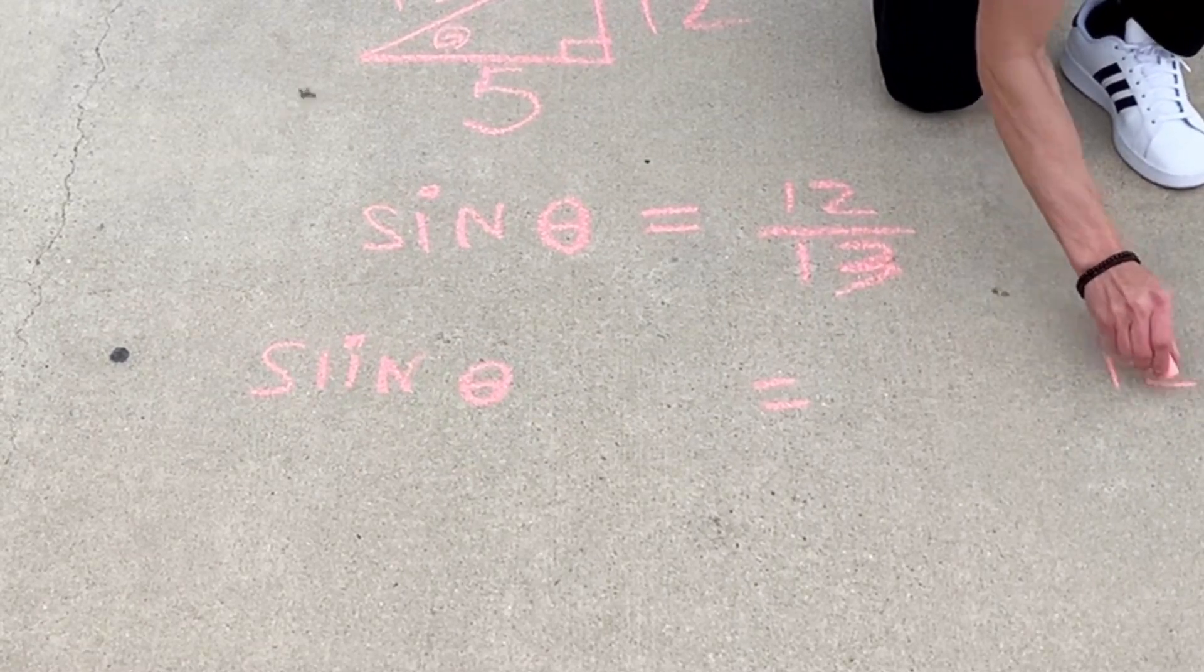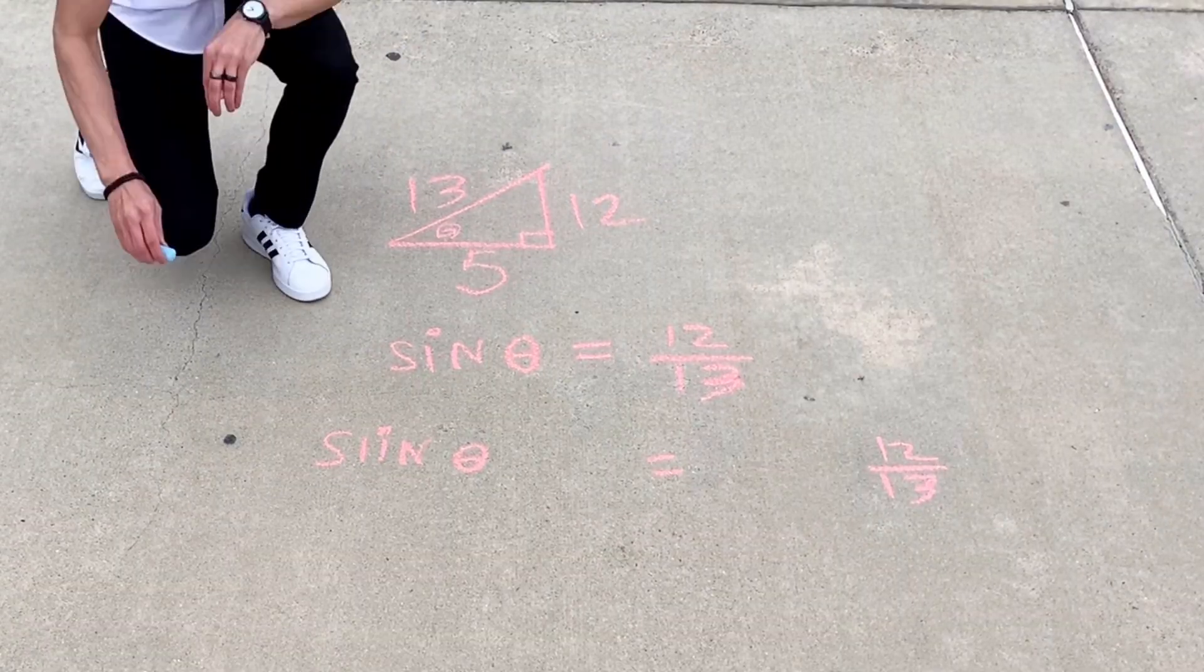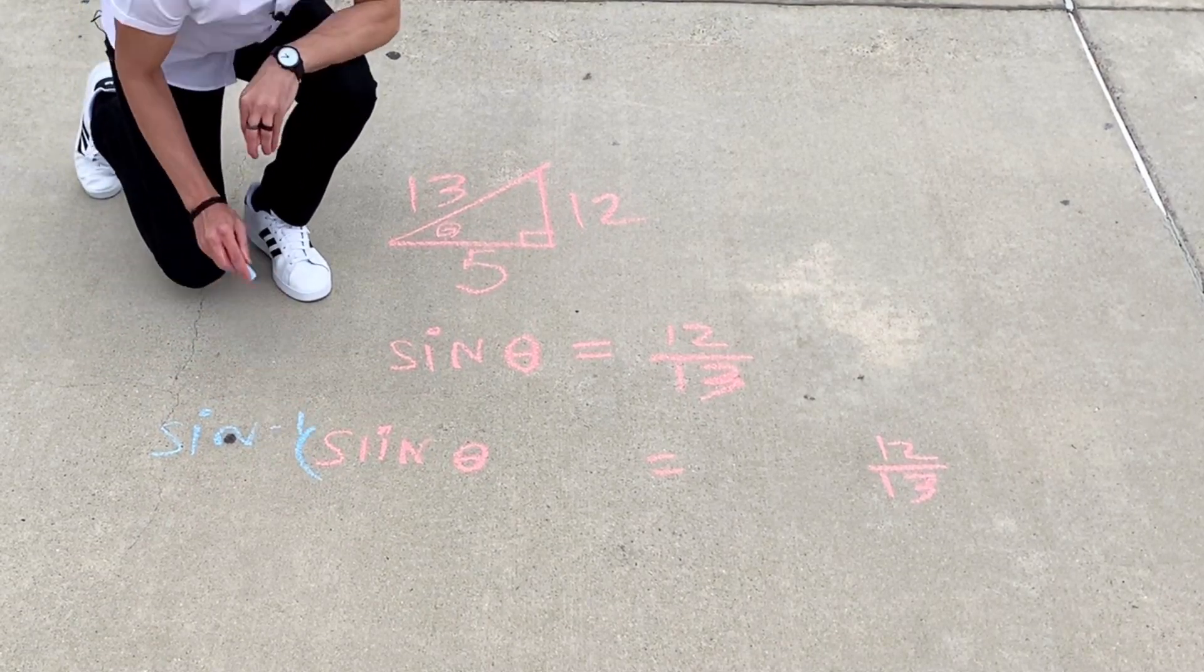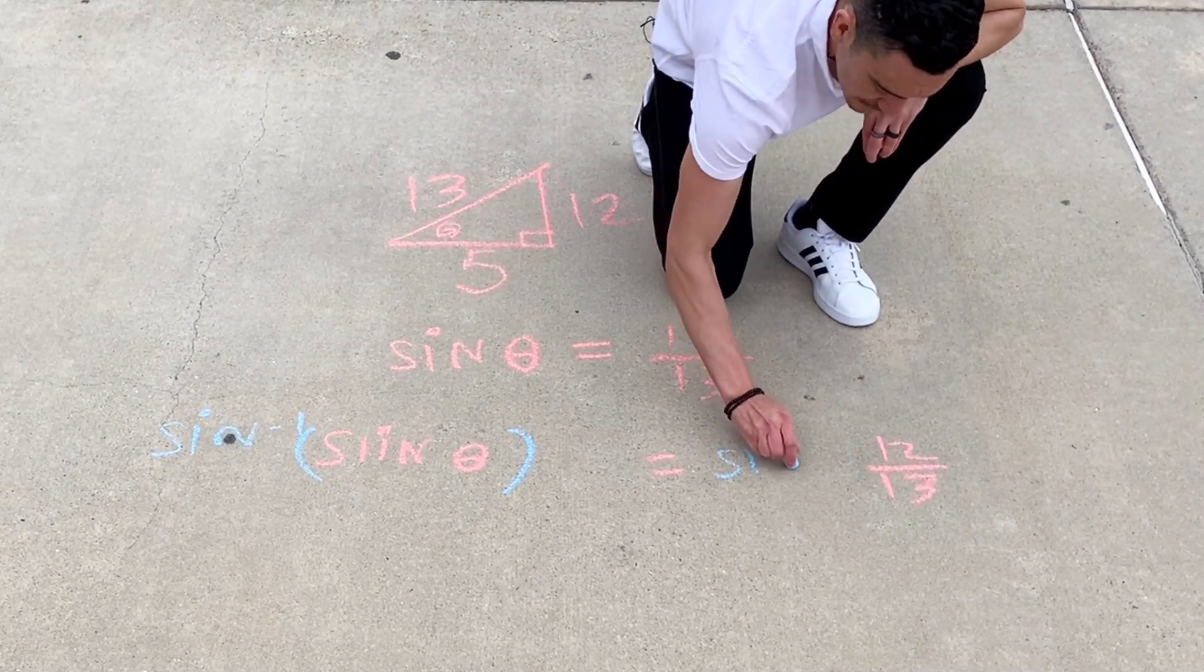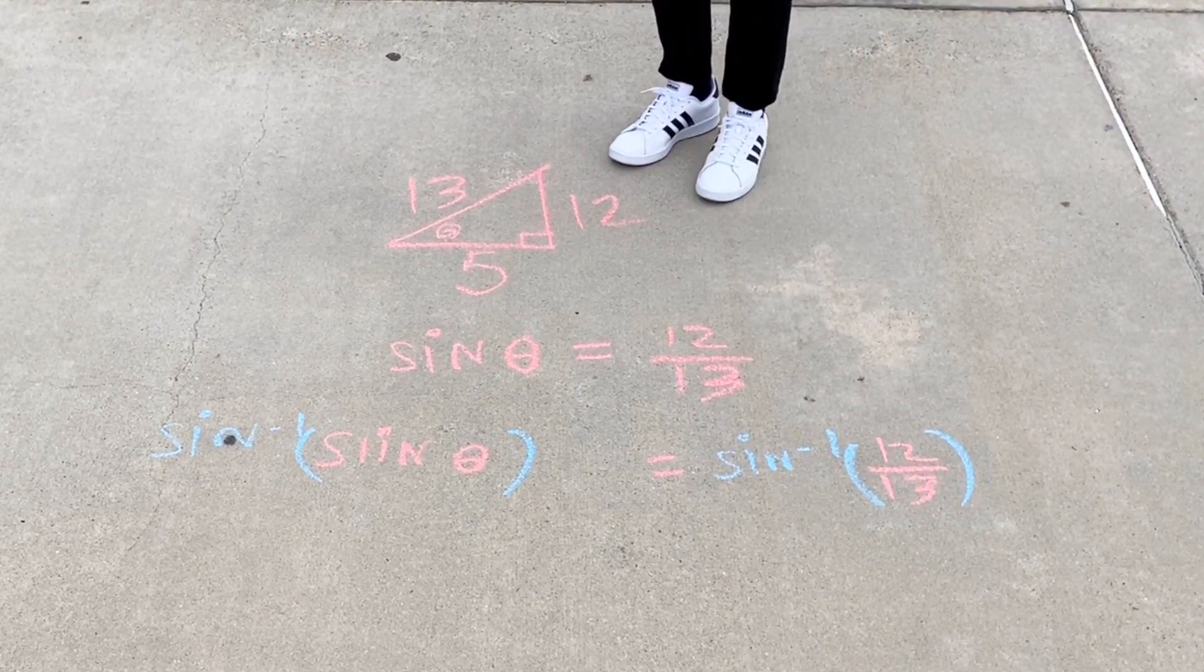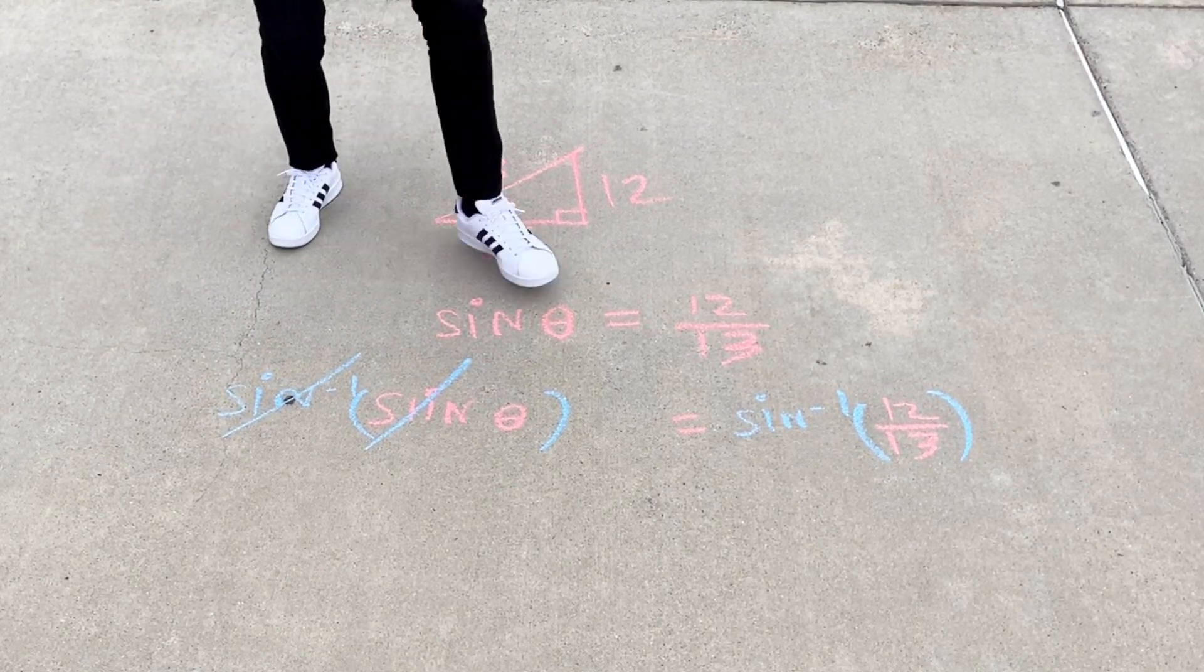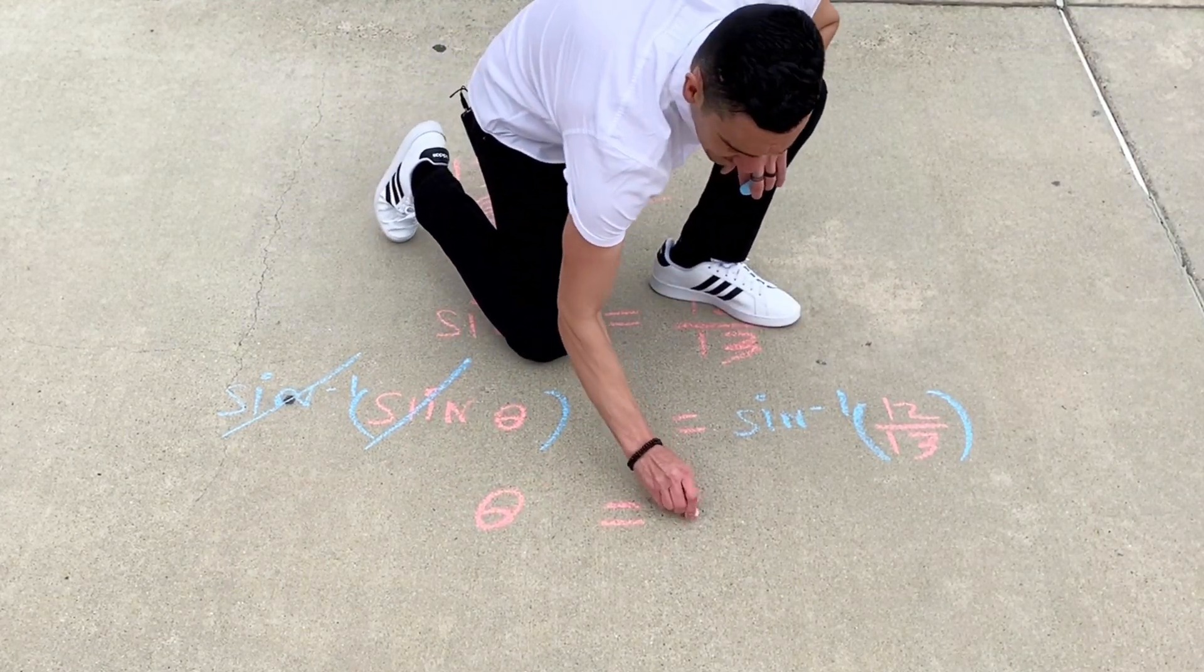So now, what I want to do to both sides is I want to take the sine inverse. Check it out. I want to go sine inverse of not just the left-hand side, but also sine inverse of the right-hand side. Now, we know what happens. We know that over here, sine inverse knocks out sine. So all that's left is theta equals sine inverse, parentheses, 12 thirteenths.